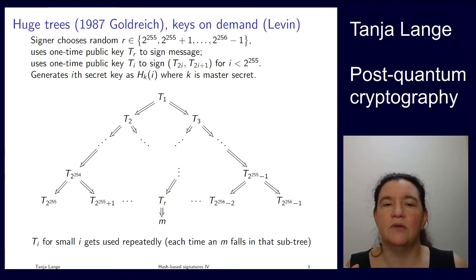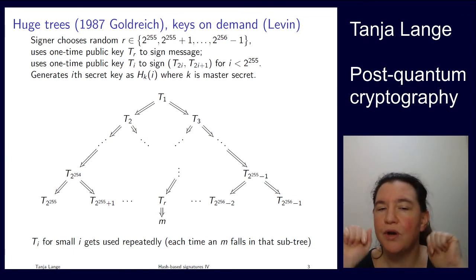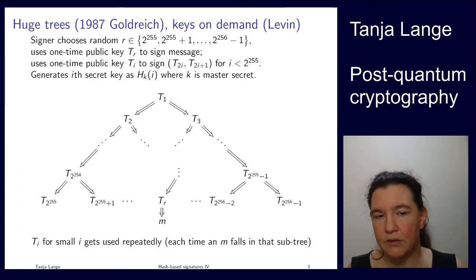Now you should be concerned for instance looking at this t3 there. This t3 gets used for tr but it also gets used for t2 to the 256 minus 2. Now each of those bottom layer leaves has a very small chance to be used. But t3 is included in every right half. So t2 is included in every left half. t3 is included in every right half. So as soon as you sign more than two messages you will have used one of those two twice. And it's a one-time signature scheme.